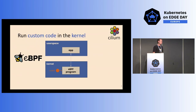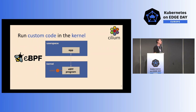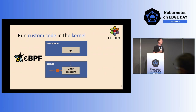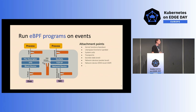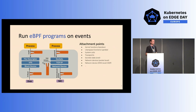eBPF runs custom code in the kernel based on events. It has user space and a kernel space. When an event — for example, a packet arrives at the network interface — an eBPF program can be triggered on that event and execute custom logic with it. Every time a process connects, a TCP retransmit happens, or a packet leaves or arrives at the network interface, Cilium with eBPF can inspect that traffic to provide rich observability or to provide services across clusters.